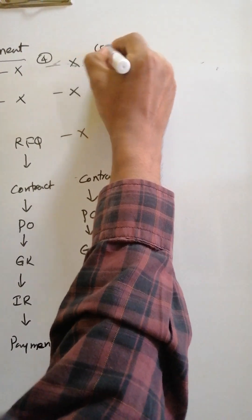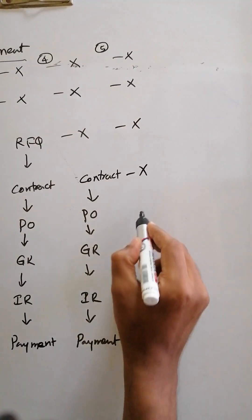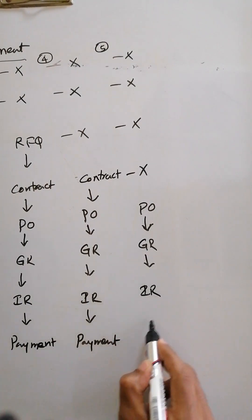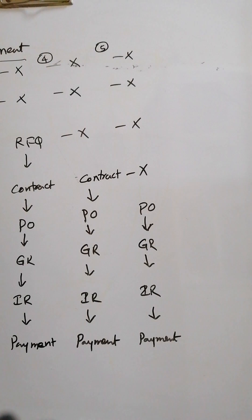Case 5: No MRP run, no PR, no RFQ, no contract. They directly create a purchase order. Then GR, IR, and payment. So for stock procurement, PO, GR, and payment are mandatory, and the rest are optional. If you use MRP, PR is automatically created. If you have a contract, the price comes automatically and the vendor holds the agreed price even if market prices fluctuate.